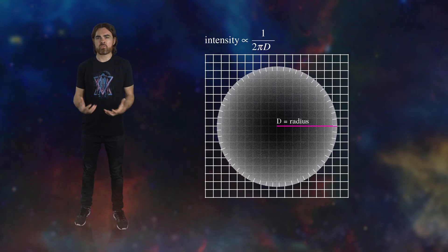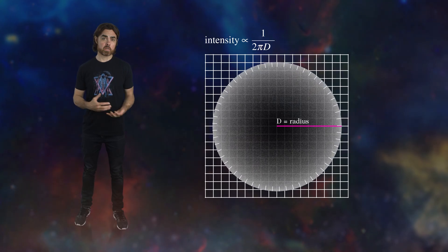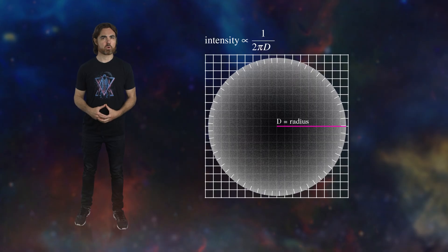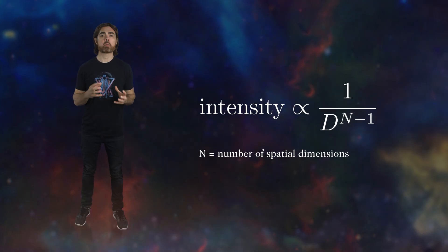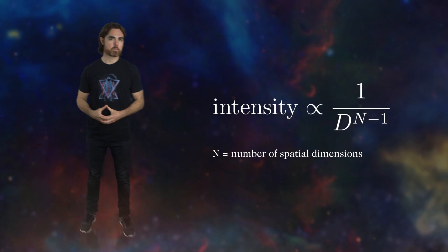The way pulses fade in brightness depends on the number of dimensions, typically proportional to 1 over the distance to the power of the number of dimensions minus 1. So in 4 plus 1 dimensional spacetime, brightness should drop off more quickly than in 3D space.